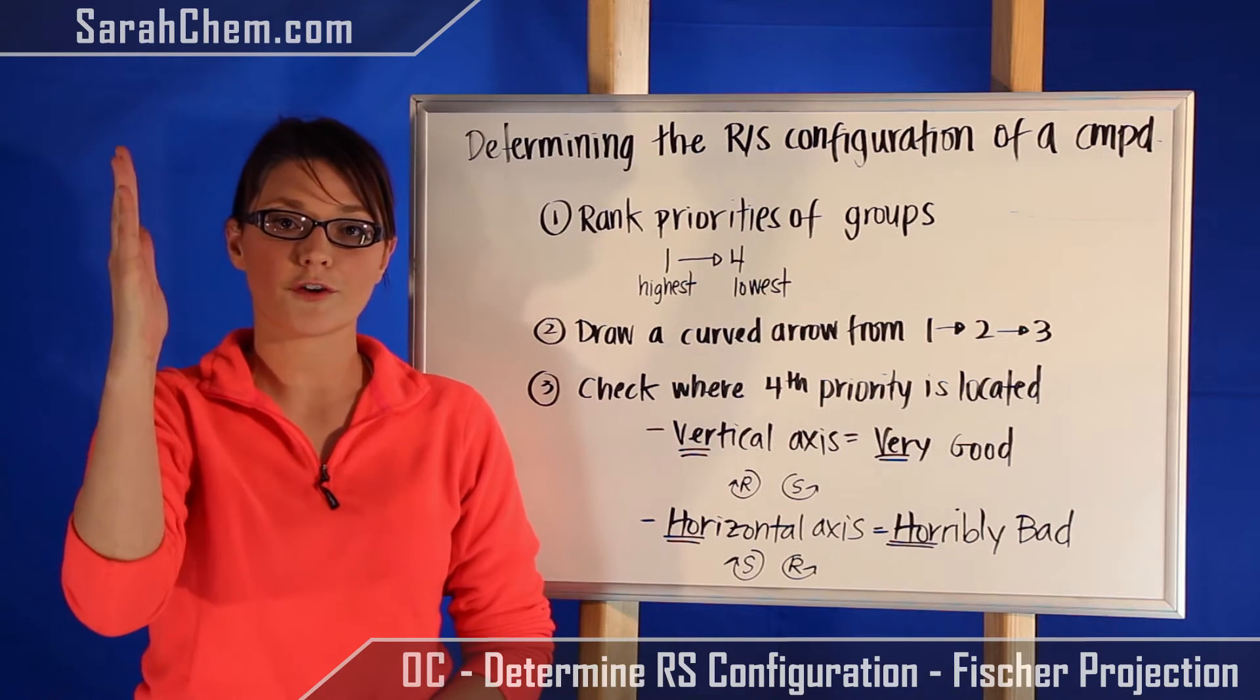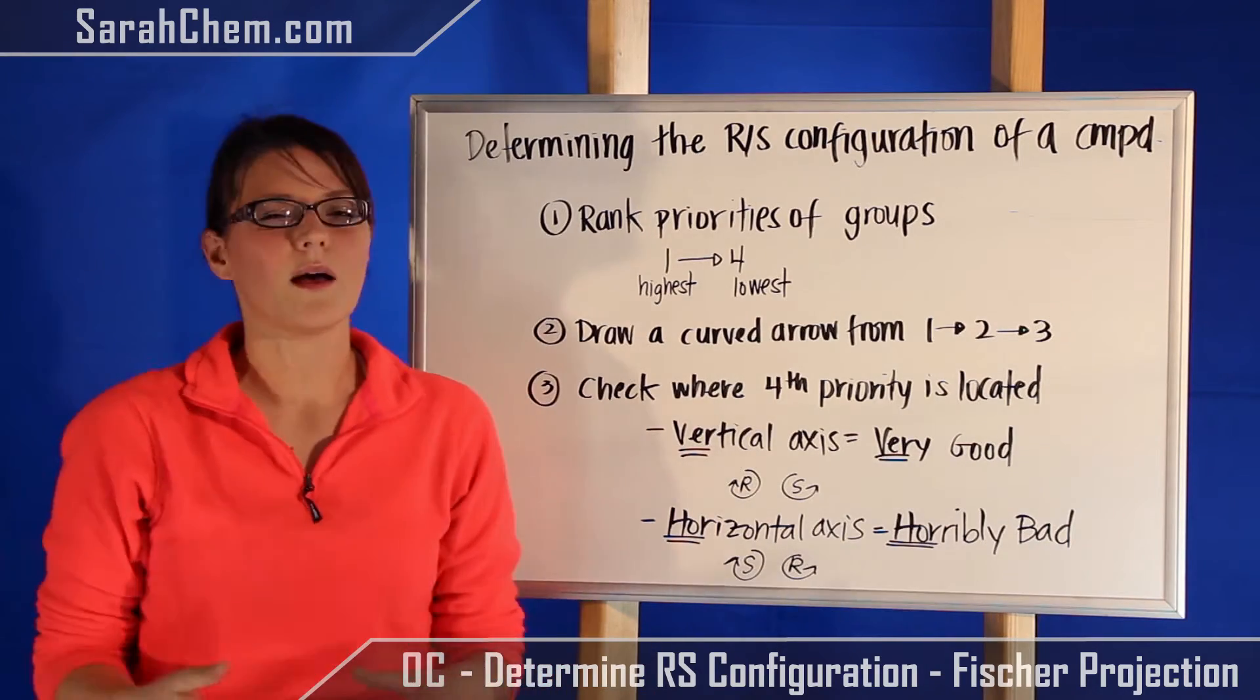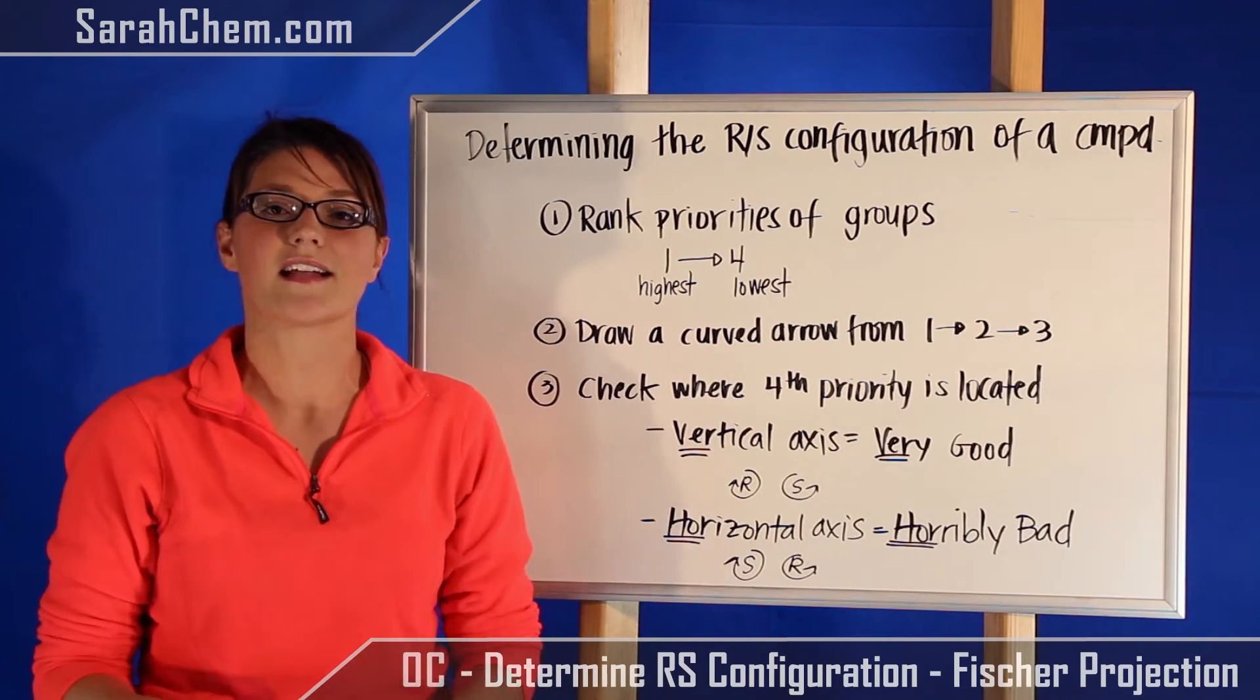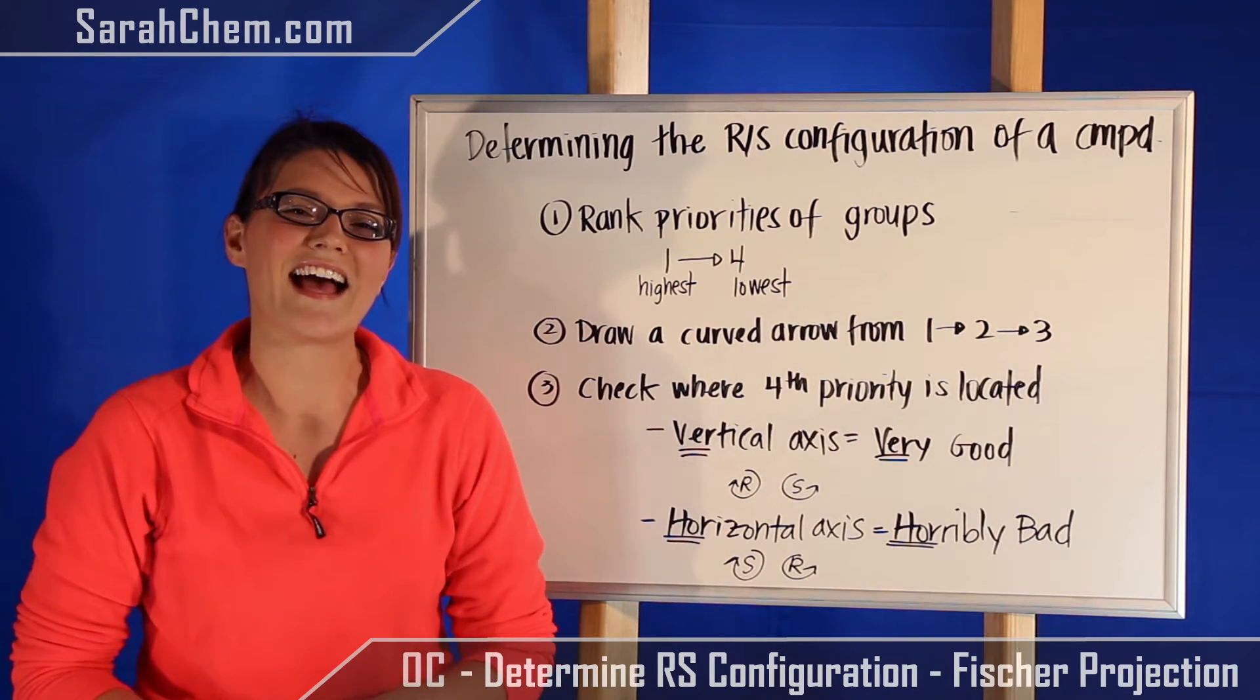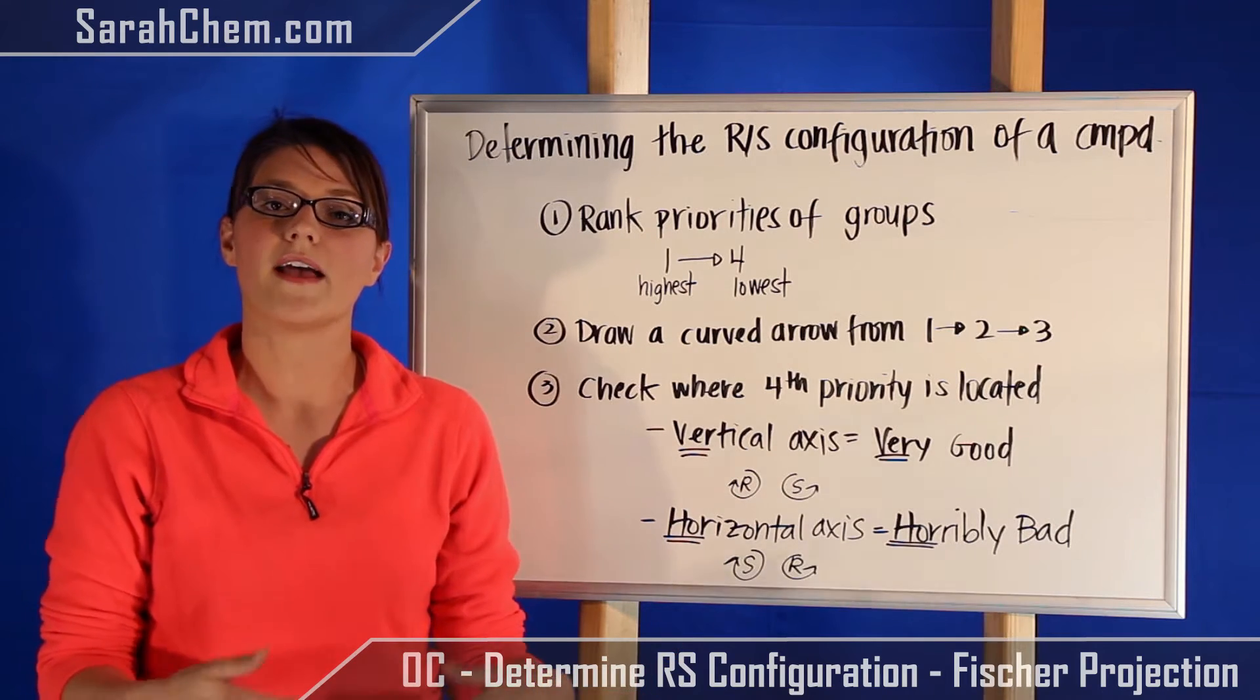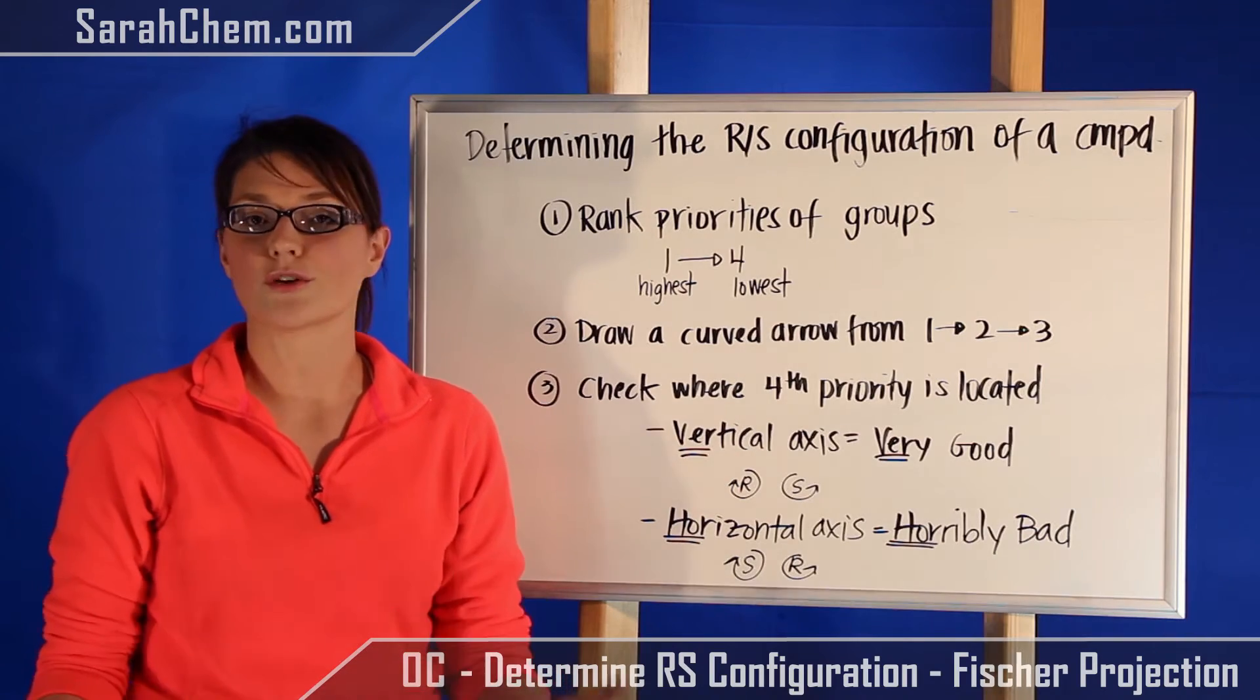The third thing is to take a look at that fourth group and figure out where it's located. Is it located on a vertical axis or is it located on a horizontal axis? So it's silly. It's in Dr. Paula Bruce's book, but it's worked for me. So one is if it's in the vertical axis, that's very good. So vertical, very good. So in that case there, the reason we're saying it's very good is because what you see is what you get. So if you have a clockwise, that's an R. If you have a counterclockwise, that's an S. This is the general rule.